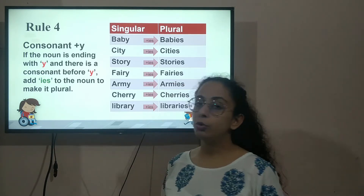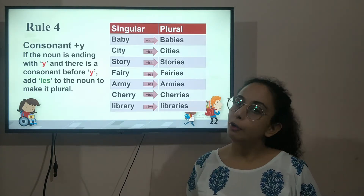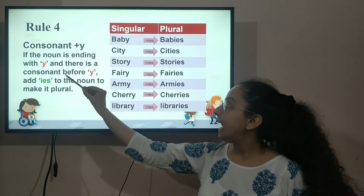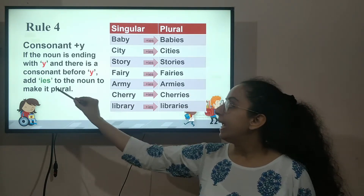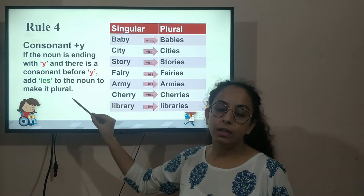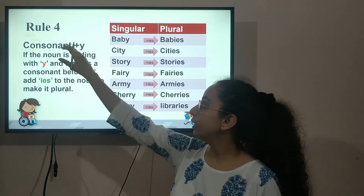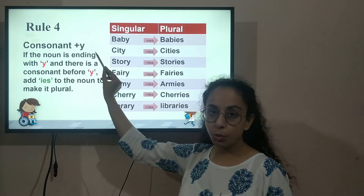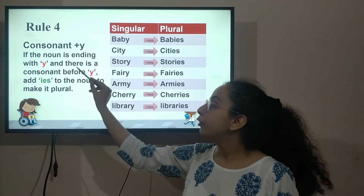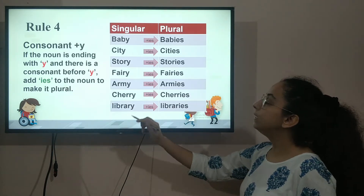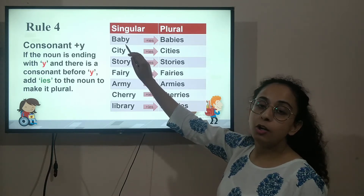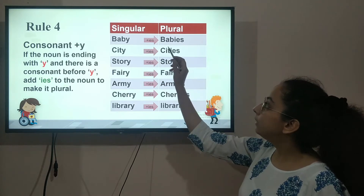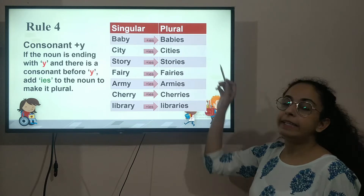Now in this video, we are going to move further and look at rule number 4. What does rule number 4 say? If the noun is ending with Y and there is a consonant before Y, we add IES to make it plural. For example, 'baby' — B-A-B-Y — B is a consonant, so to change this word from singular to plural, we remove the Y and add IES. It becomes B-A-B-I-E-S — babies.